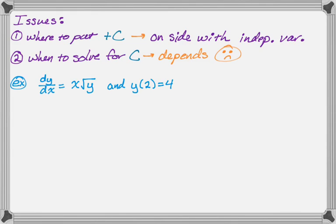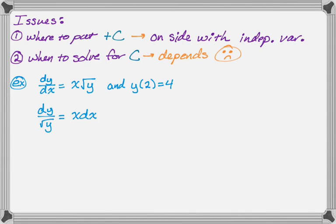The first example is dy/dx equals x times the square root of y, and we know that y(2) = 4, meaning when x is 2, y is 4. First we separate and integrate. We need dy and y on the same side, and dx and x on the same side. Cross-multiplying gives dy over √y equals x dx, and now we integrate both sides.